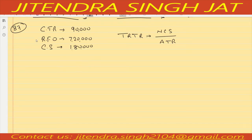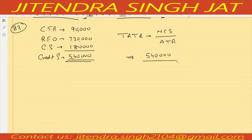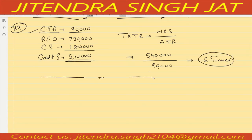Net credit sales: revenue from operations is given and cash sales is given, so we subtract cash sales. 7,20,000 minus 1,80,000 equals 5,40,000 net credit sales. Dividing by closing trade receivable of 90,000 gives a ratio of six times. The ratio is six times — it is very simple.